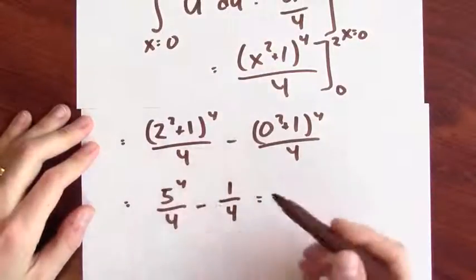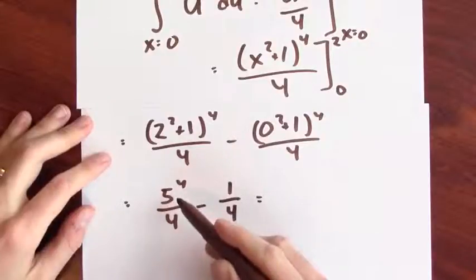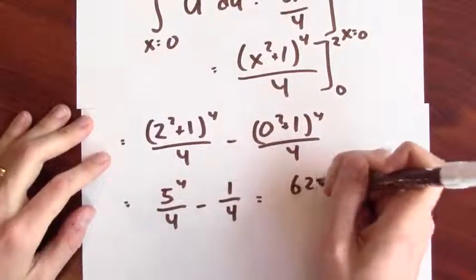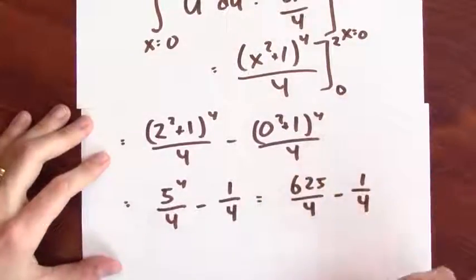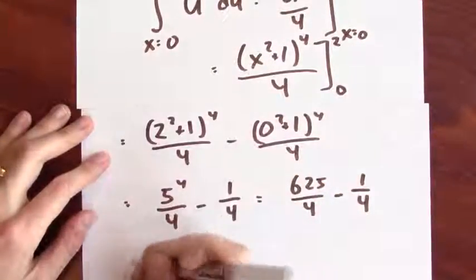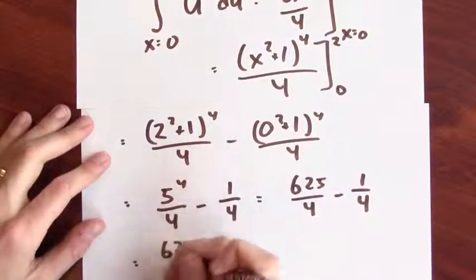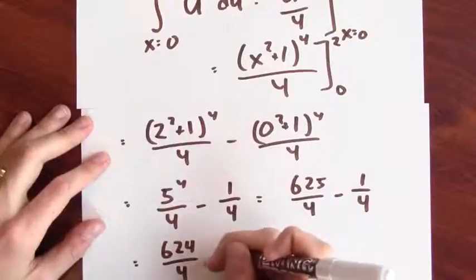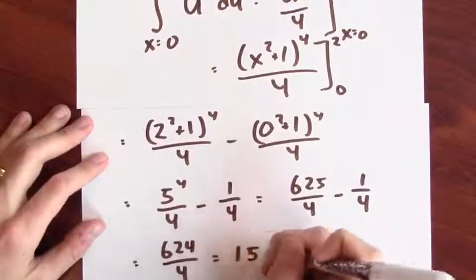And now I got to think about what's 5 to the fourth. Well, that's 25 times 25. That's 625 over 4 minus 1 over 4. And now I can combine these into a single fraction. That's 624 over 4. And that, I can simplify a bit. That's 156. We did it!